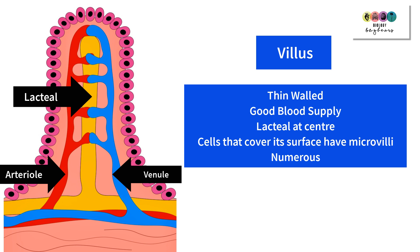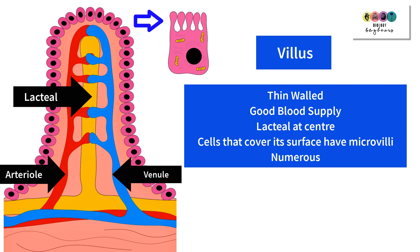Fatty acids and glycerol eventually reach the blood supply at the subclavian veins at the base of the neck. The cells covering each villus have their own infoldings called microvilli, which further increase the surface area for absorption. The fact that there are so many villi is another major benefit, further increasing the surface area. The small intestine is thus very well suited to its role of absorption, particularly because of the presence of villi.